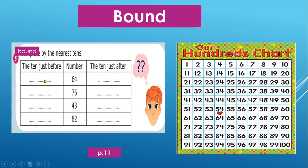Now what does mean the 10 just before 64? It means what is the first number that has 0 before 64? It's 60. Now the 10 just after, it means what is the number that has 0 after 64? It's 70.